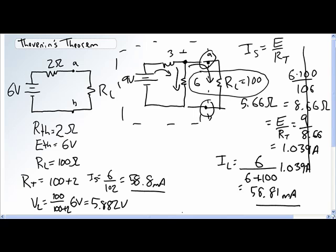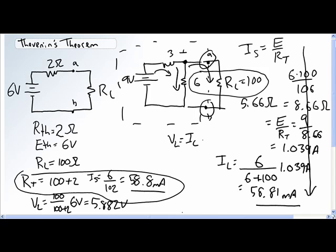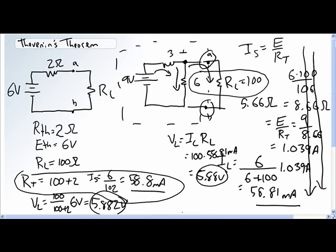But look at all the calculations we had to do when we did it here in a single step. Now we've got to figure out what is the voltage across the RL. So voltage across RL, VL is equal to IL times RL. So 100 ohms times 58.81 milliamperes equals 5.88 volts. We came up with the same answer here as we did there, but we had to go through this entire process to get to that.